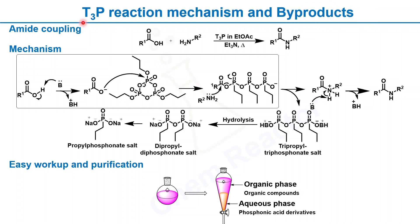To better understand T3P byproducts, we will look at the T3P reaction mechanism. Here I have taken the amide coupling reaction between an acid and an amine in the presence of T3P in ethyl acetate and triethylamine as a base. To form the amide bond, a base first deprotonates the carboxylic acid to a carboxylate anion.